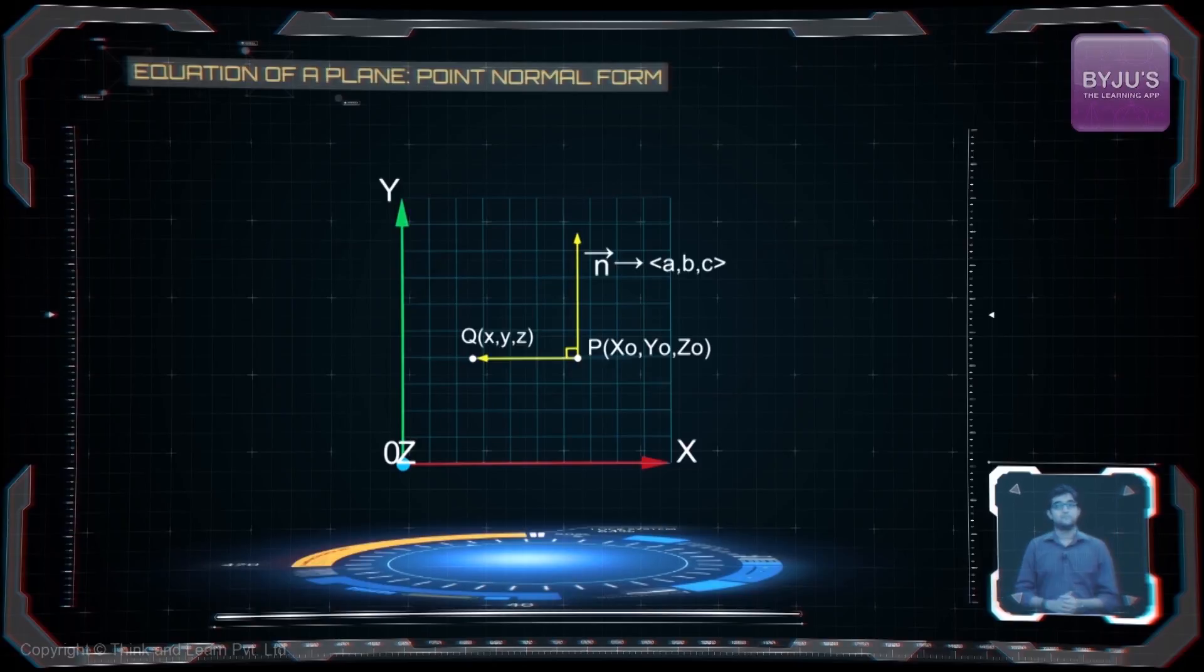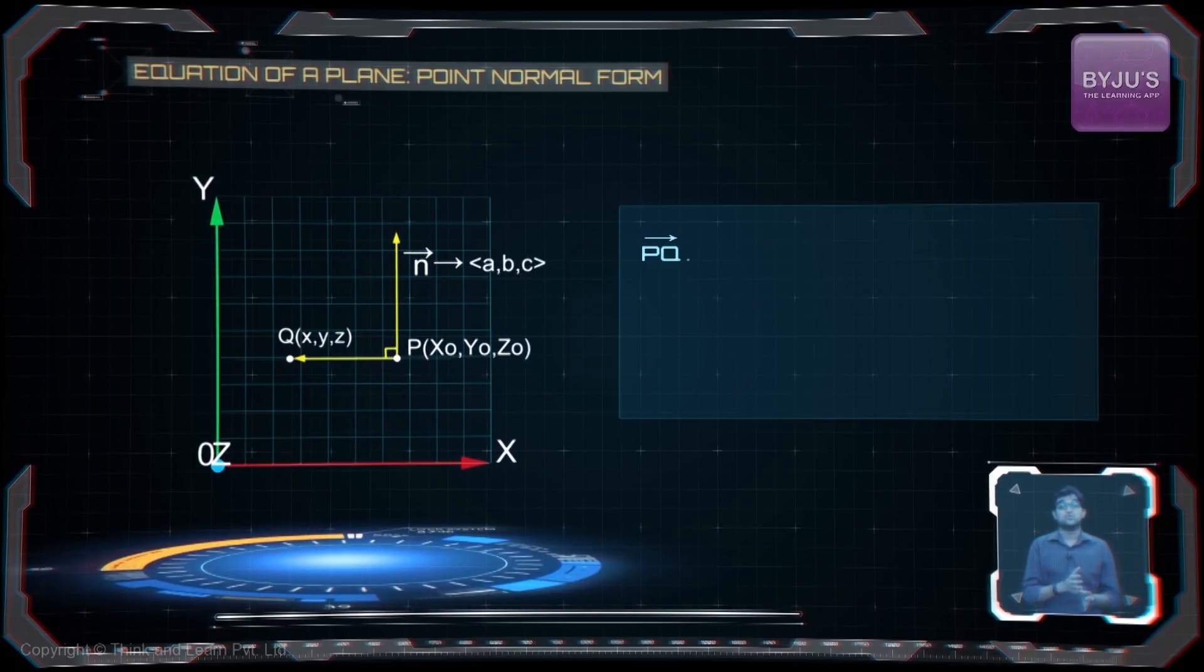Since these two vectors are perpendicular, I can say that the dot product should be zero. So I get PQ dot n is equal to zero.